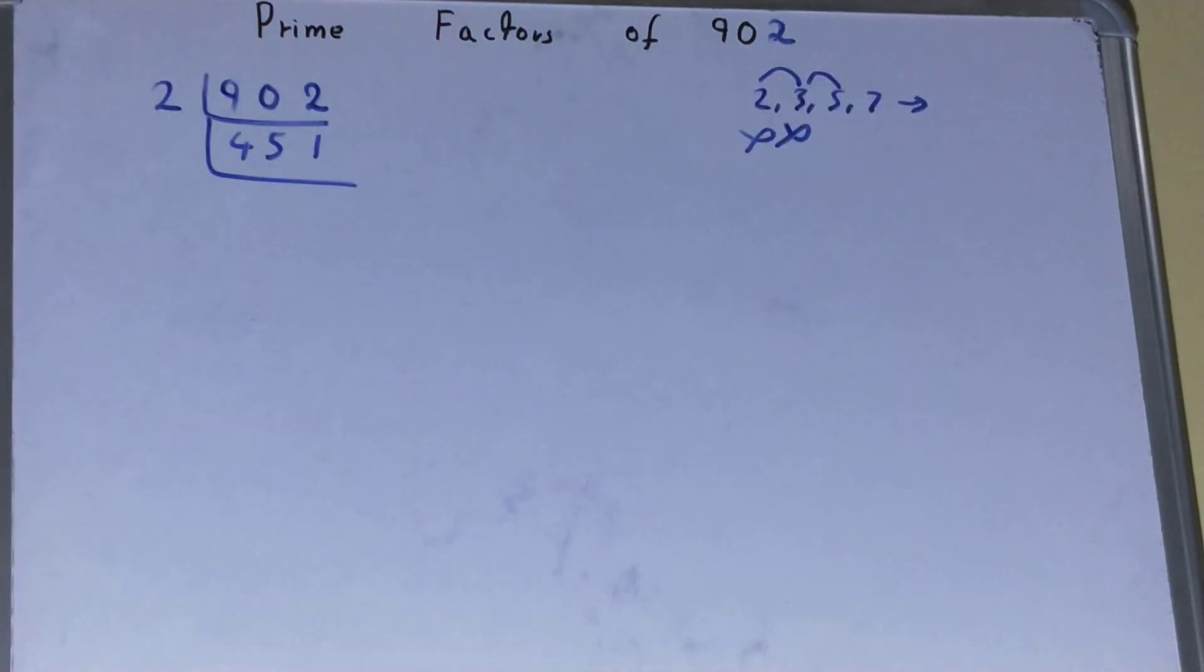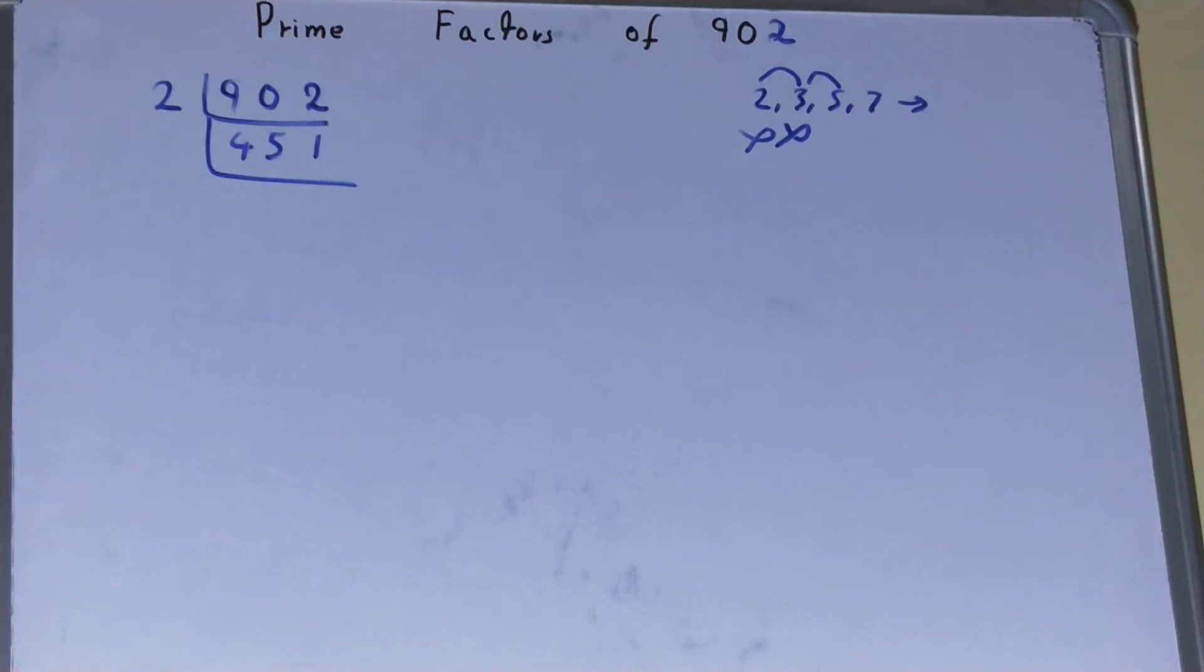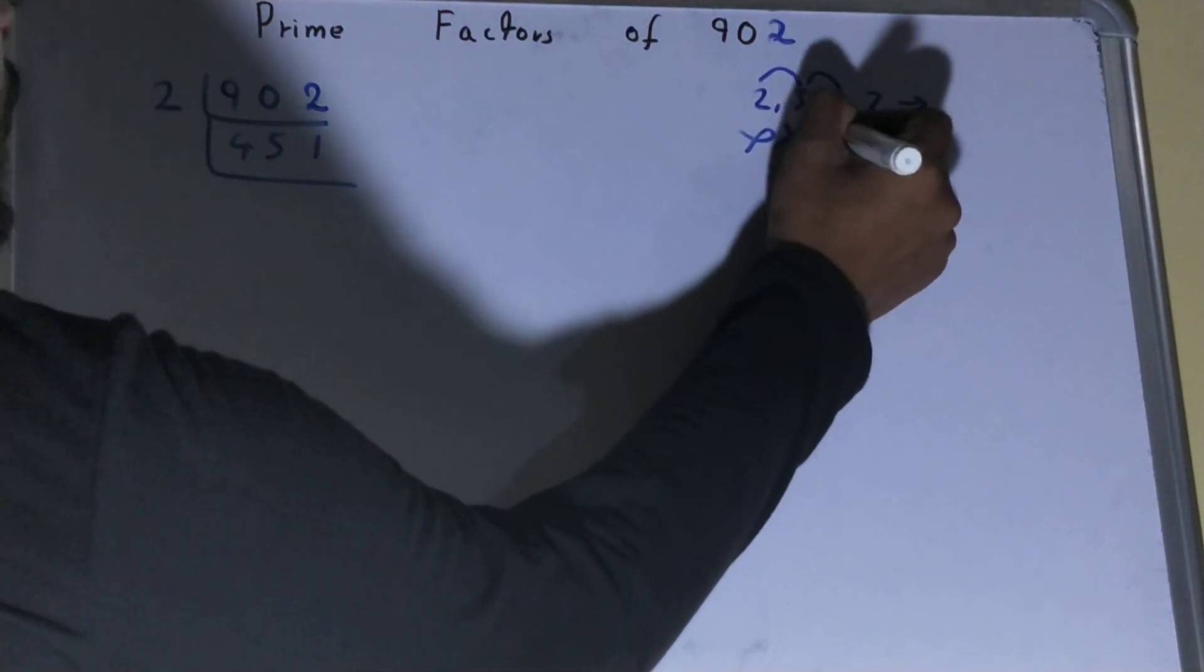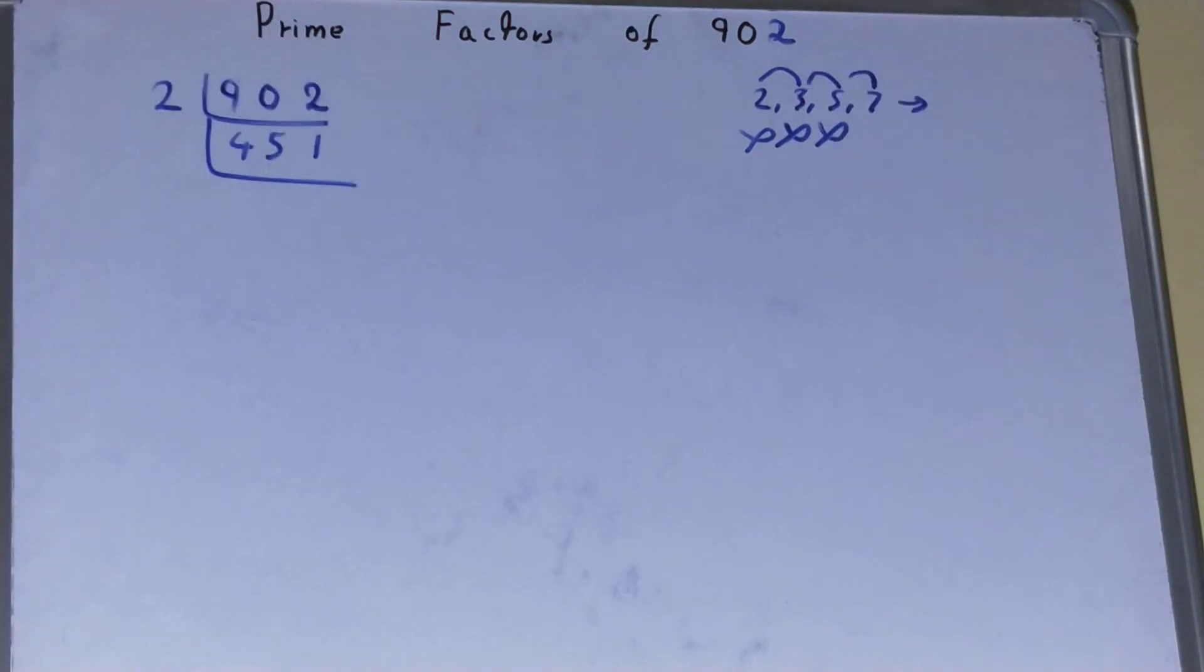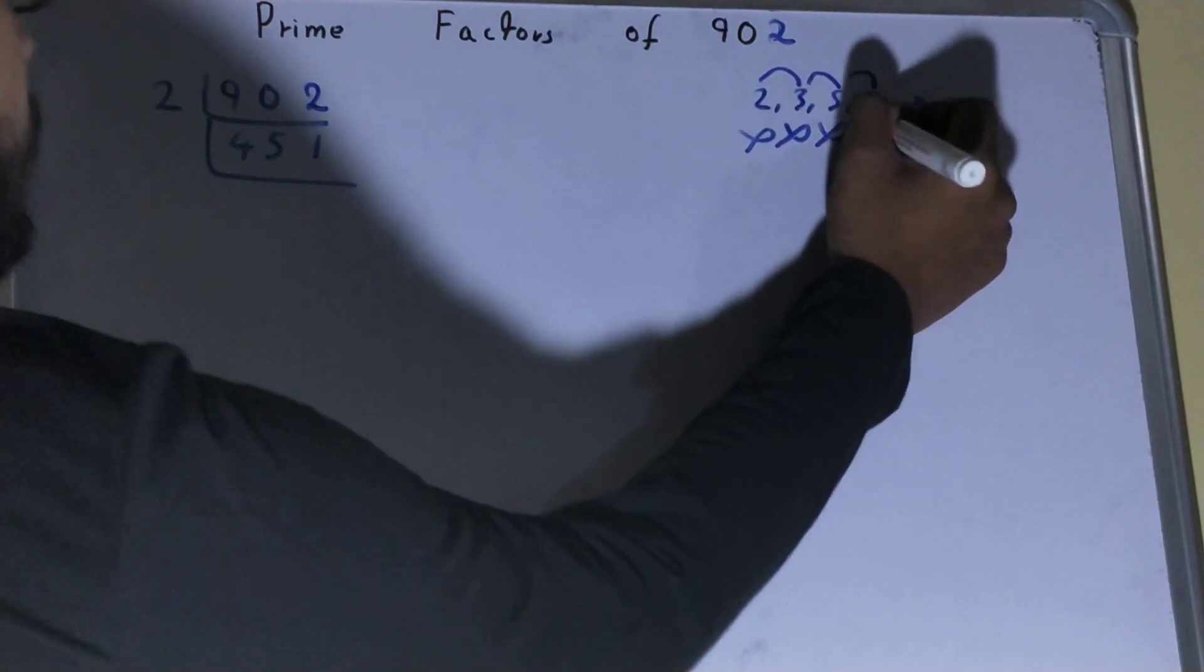Let's check it with 5. The last digit is neither 5 nor 0, so it is also not divisible by 5. Let's check it with 7. 7 times 6 is 42... not divisible with 7 also.